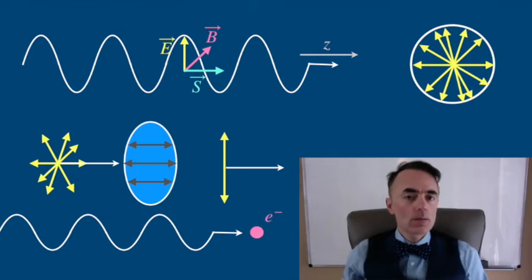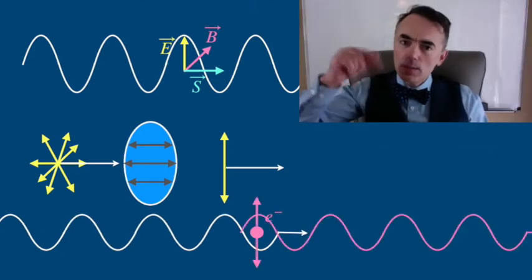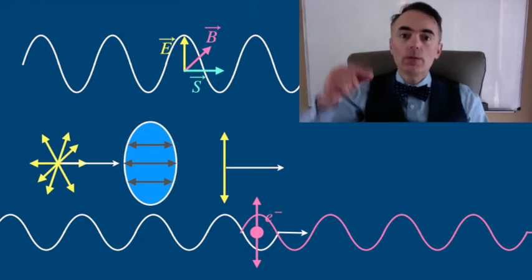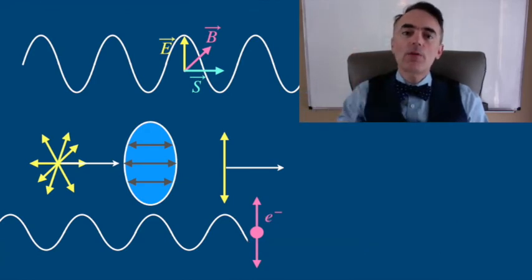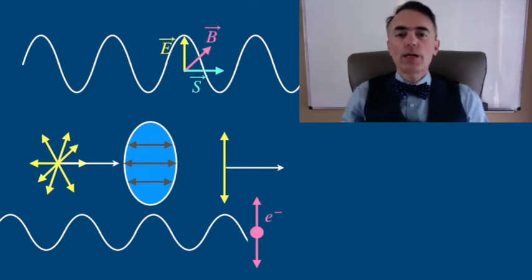It does so because light makes the electrons oscillate which themselves create an electric field that cancels the electric field of the oscillation of light going forward in that particular direction.